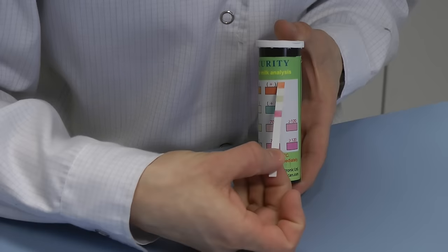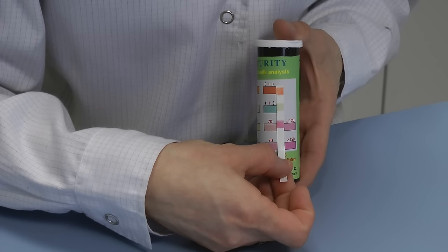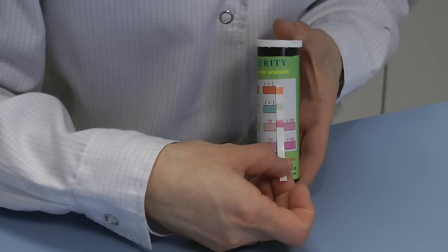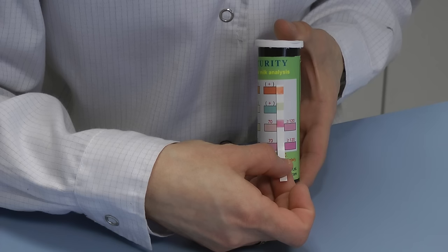When there is adulteration with urea, the third, last indication area is changing its color from yellow to pinkish red.